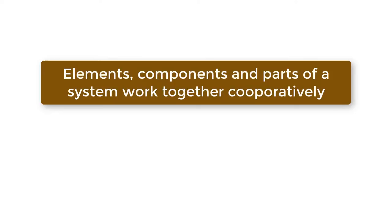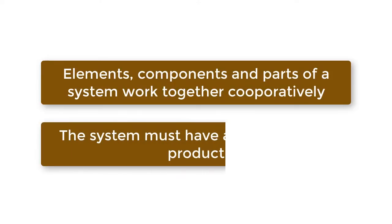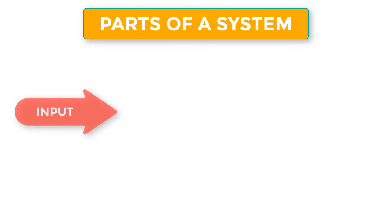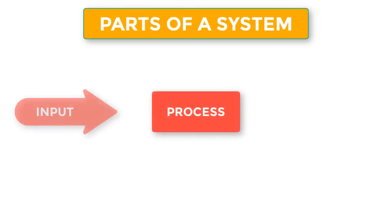Systems are built around elements, content, parts, or components — these are the input resources of the system. The elements and components work together cooperatively, and the system must have a process. Then comes the product — achieving some predetermined goals. In other words, there are three parts of a system: number one, the input resources — all that you put into the system; then the process, which is the interrelationship and working together; and then the product, which is the output.